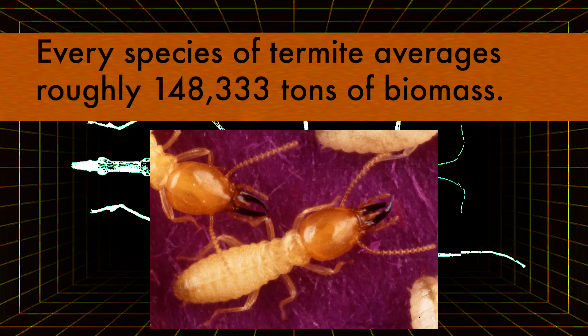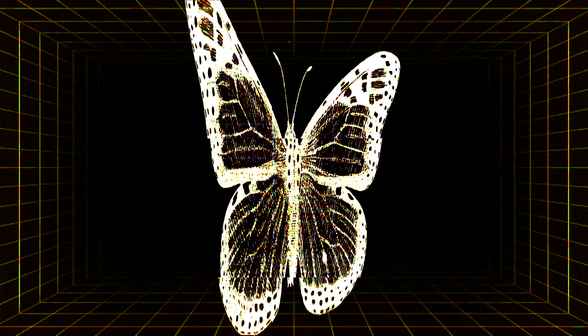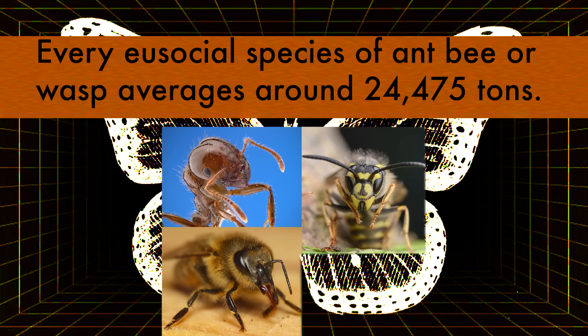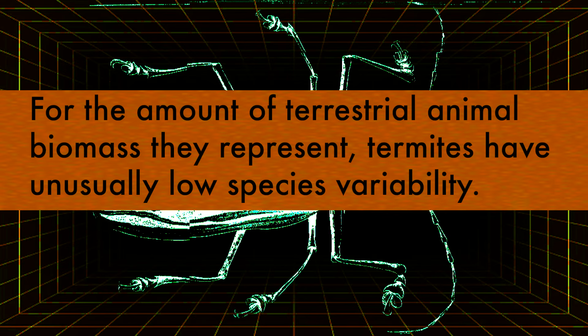Termites are fascinating in that they have an incredibly low amount of biodiversity when measured against the total amount of biomass that the entire order takes up. Even compared against specifically the eusocial Hymenoptera — the order containing ants, bees, and wasps — termite species are on average about 4.6 times more massive in terms of global biomass than each eusocial Hymenoptera species. Meaning that in purely technical terms, the termite is likely the animal with the lowest amount of biodiversity per unit of biomass among all terrestrial animals.